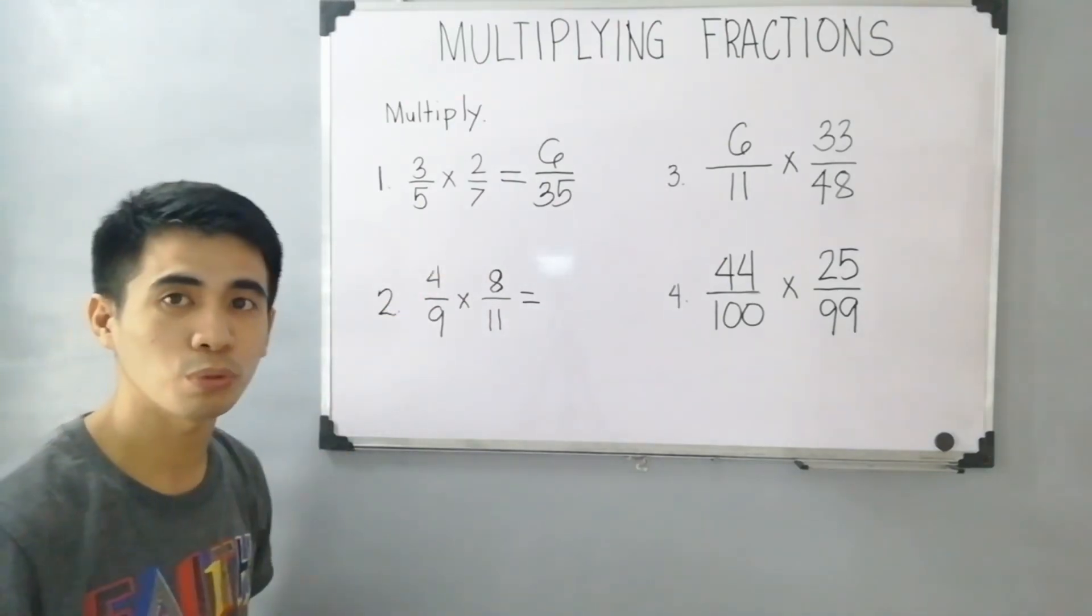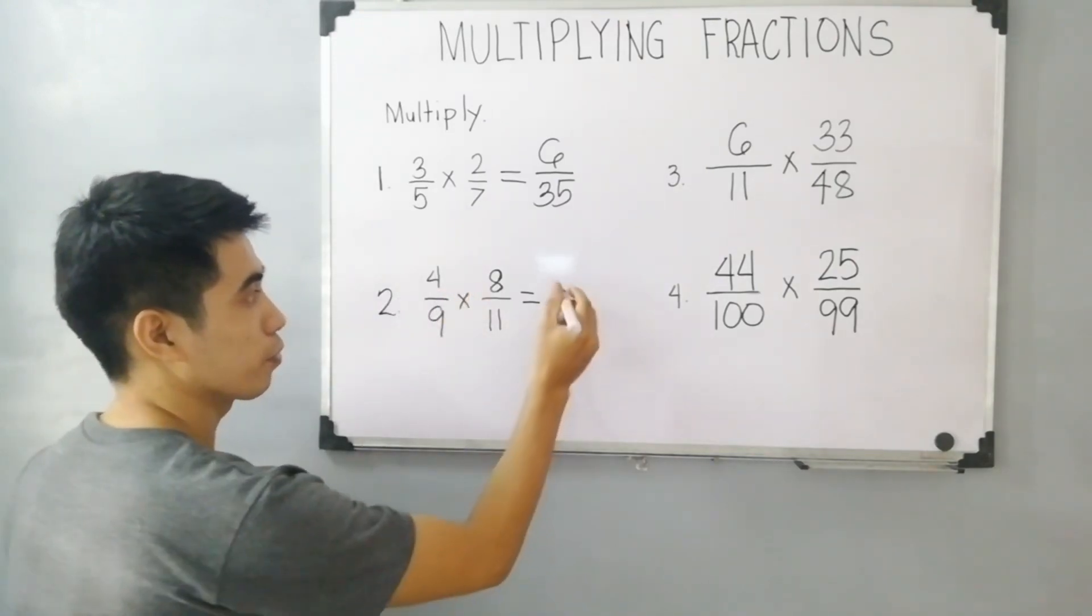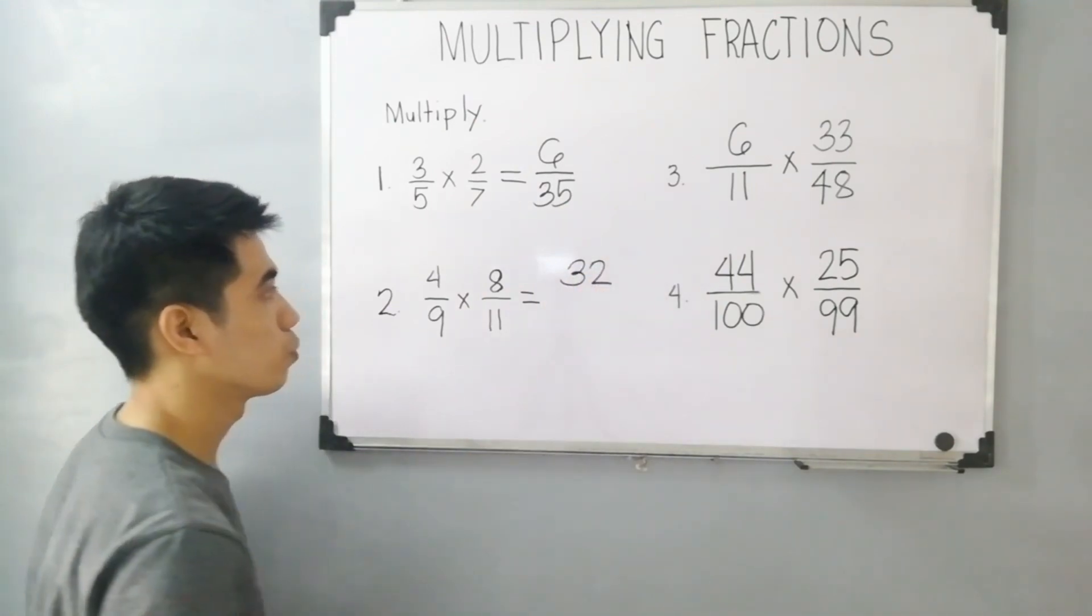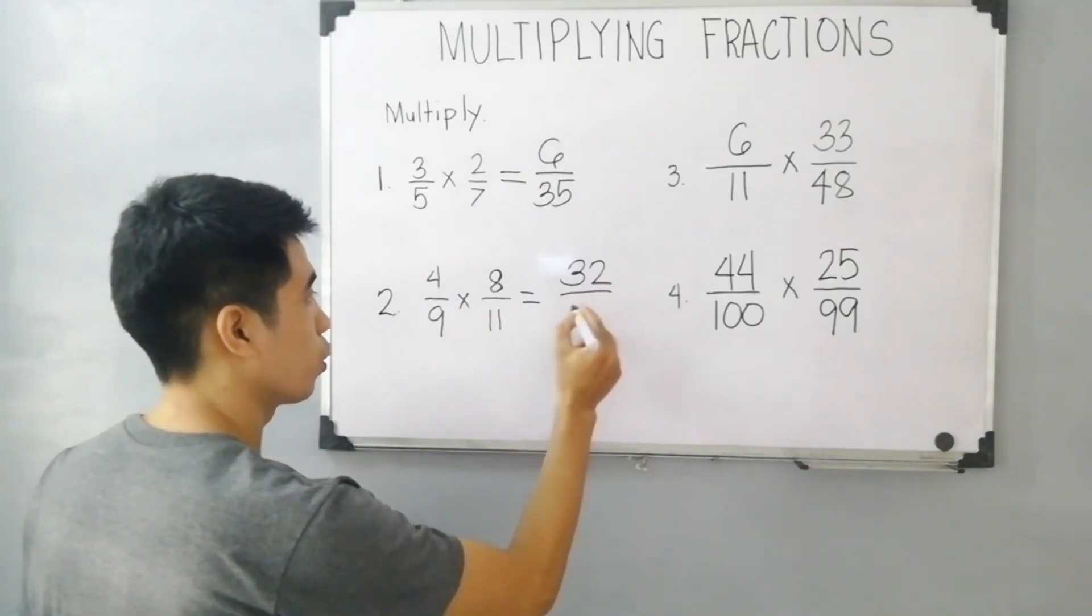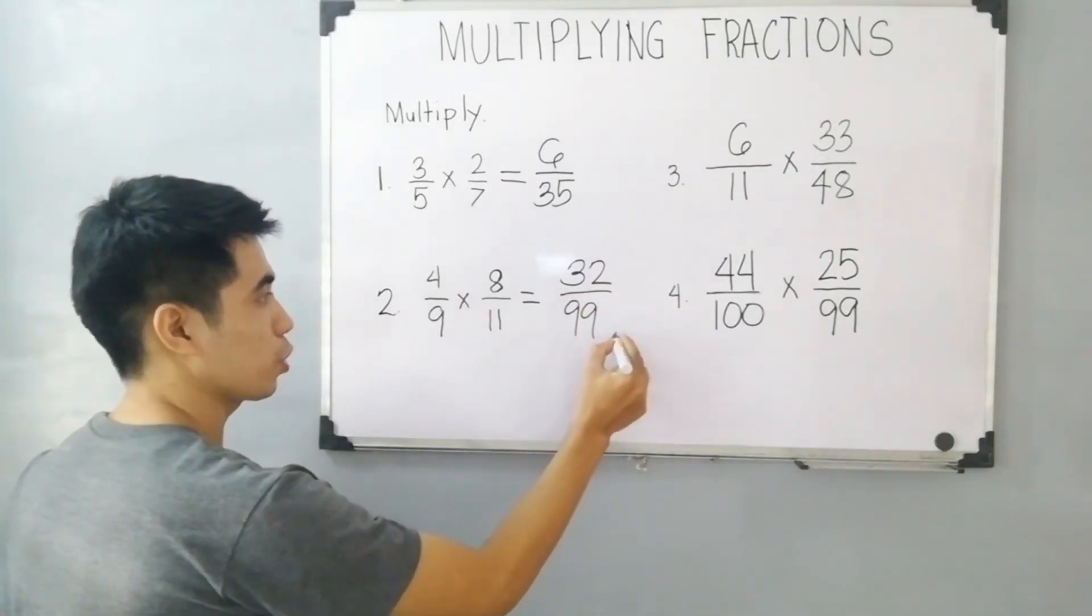Therefore, proceed to the process of multiplying fraction. 4 times 8, that is equal to 32. 9 times 11, that is equal to 99. Therefore, our final answer is 32 over 99.